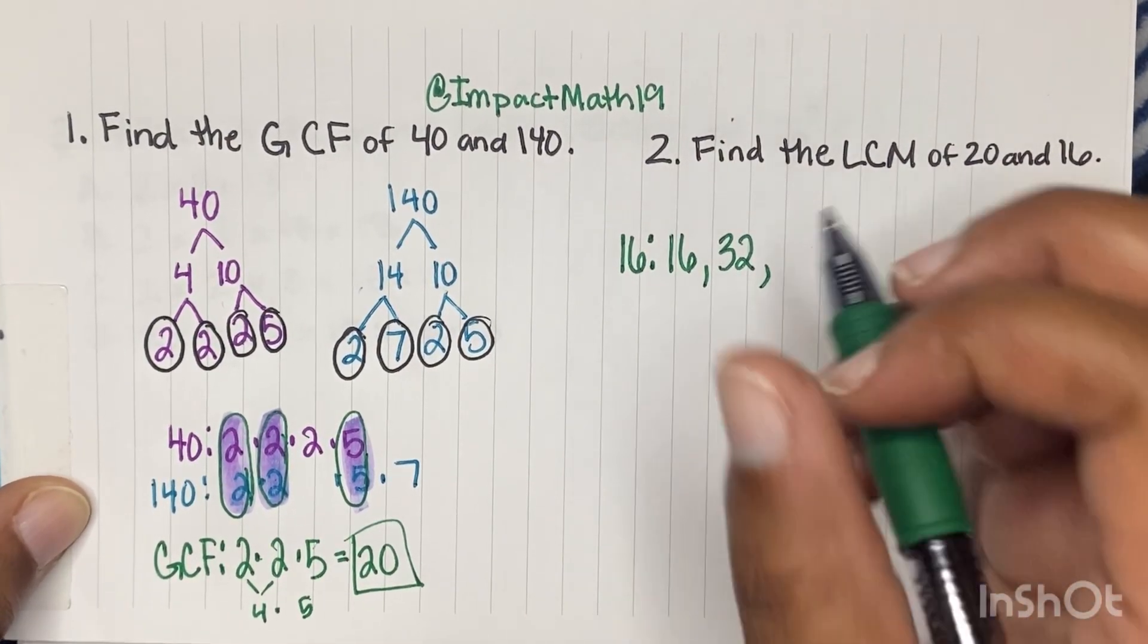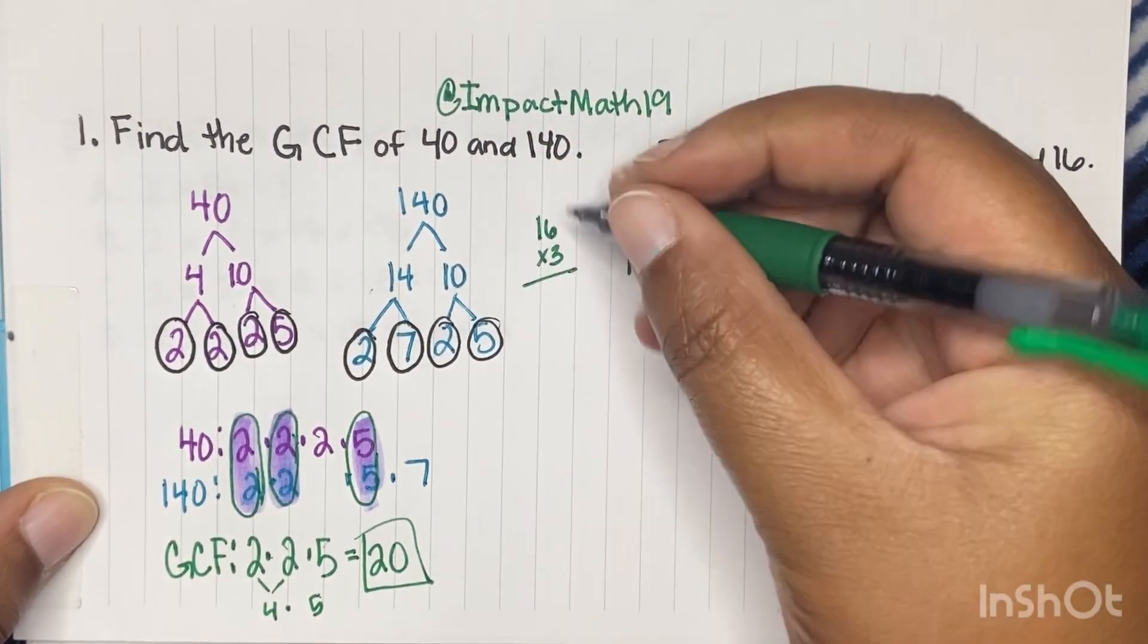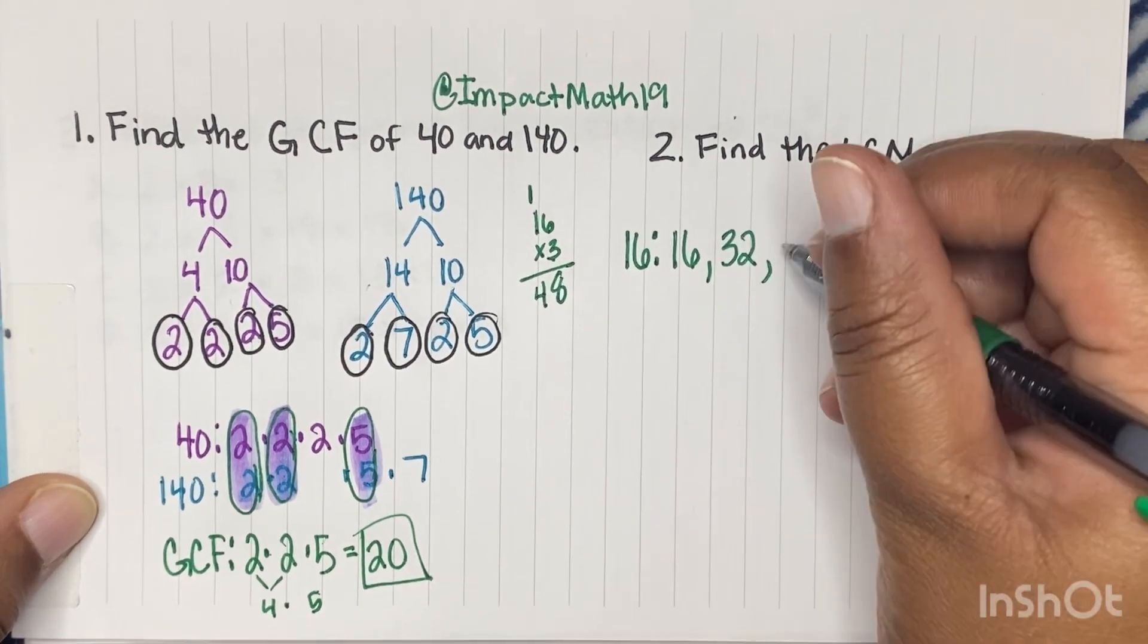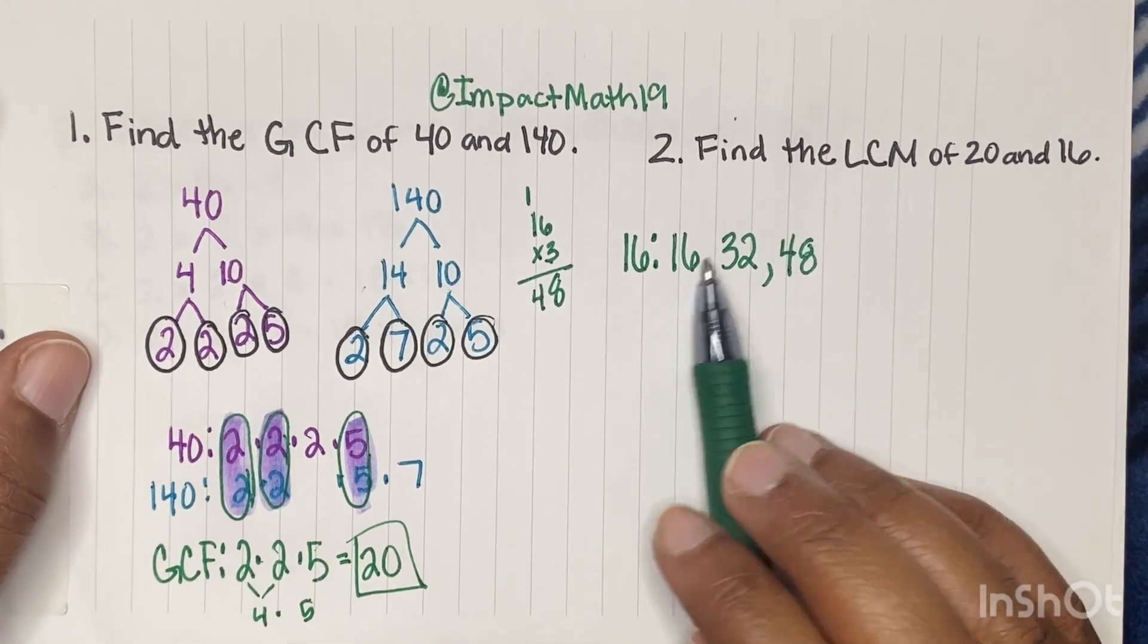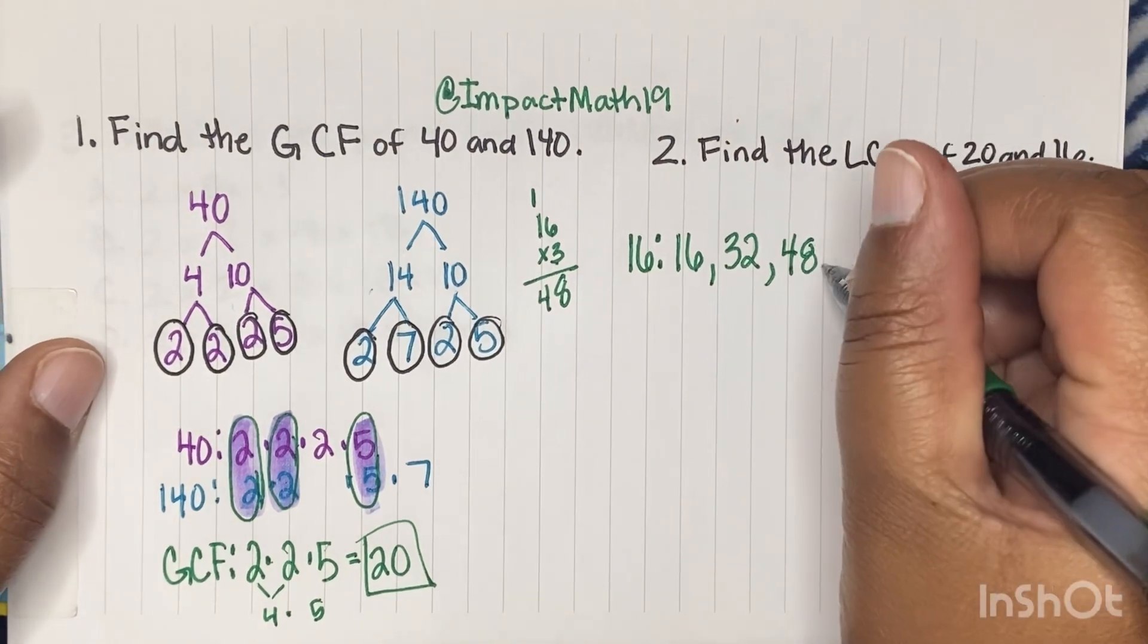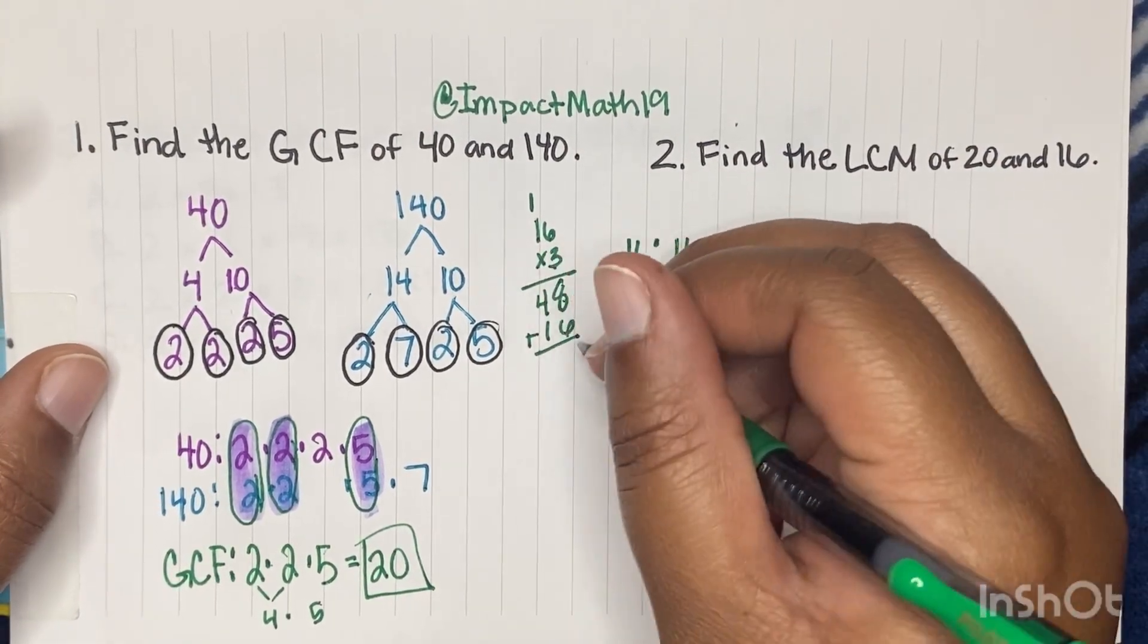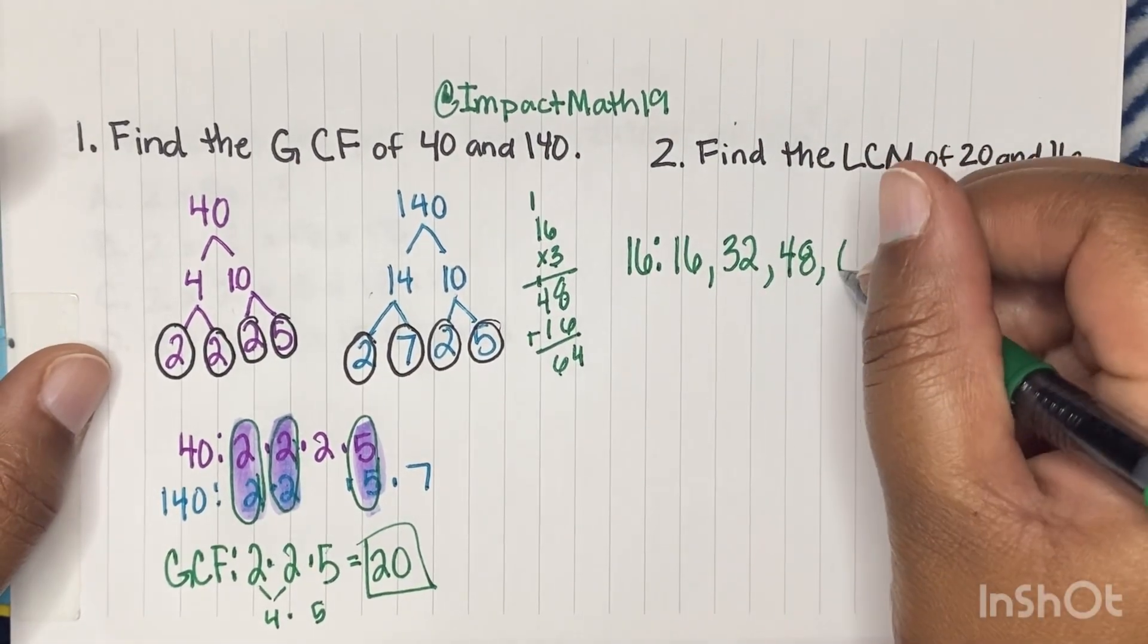Then to get our next one, if we do 16 times 3, so 3 times 6 is 18, carry the 1, and then 3 times 1 is 3, plus 1 gives us 48. So it would be 48. So we would have 16, 32, 48. And then let's do another one. Let's add another 16 here and find the fourth multiple. So 8 plus 16 gives us a 4, and then 4 plus 2 gets us 64.